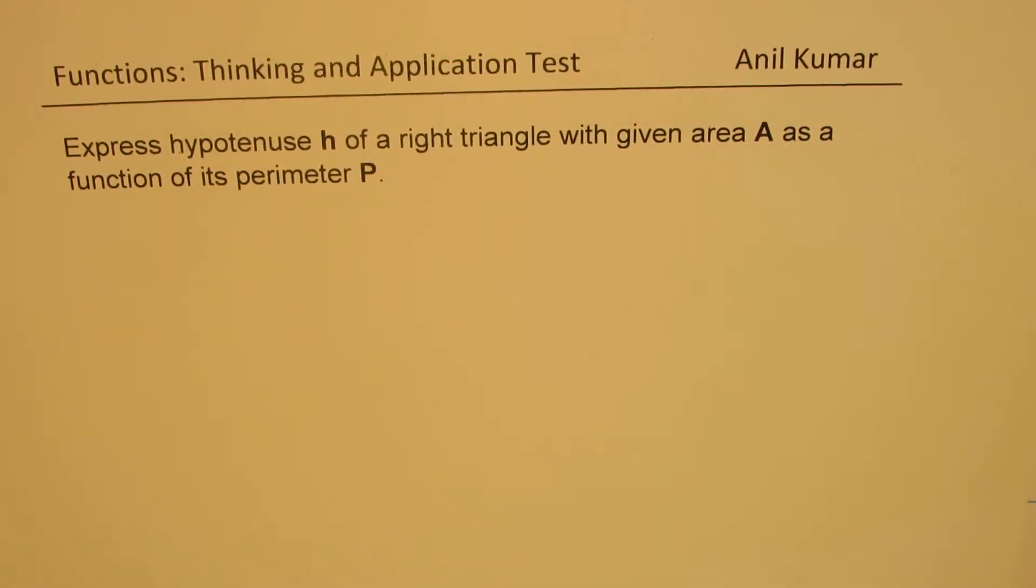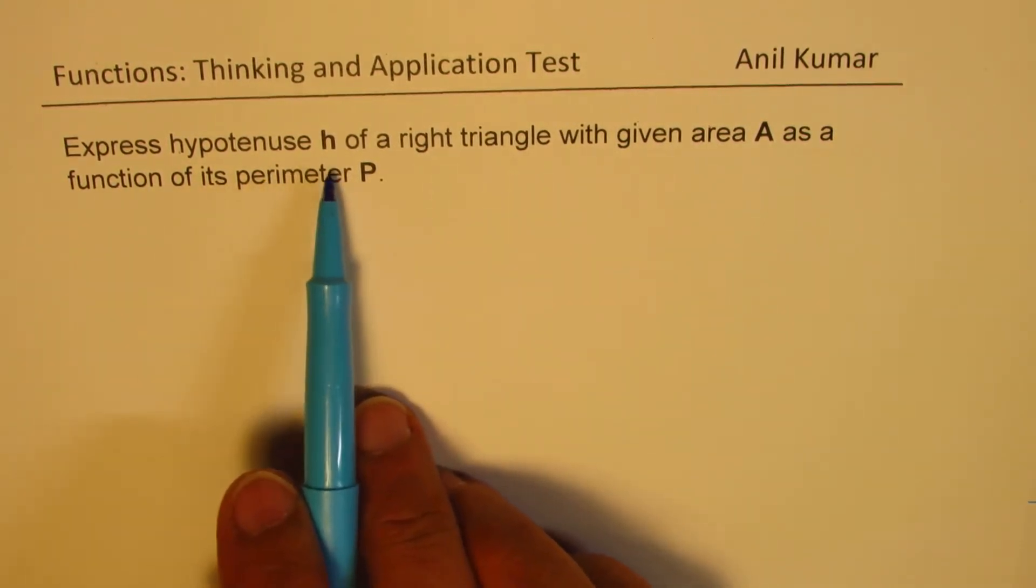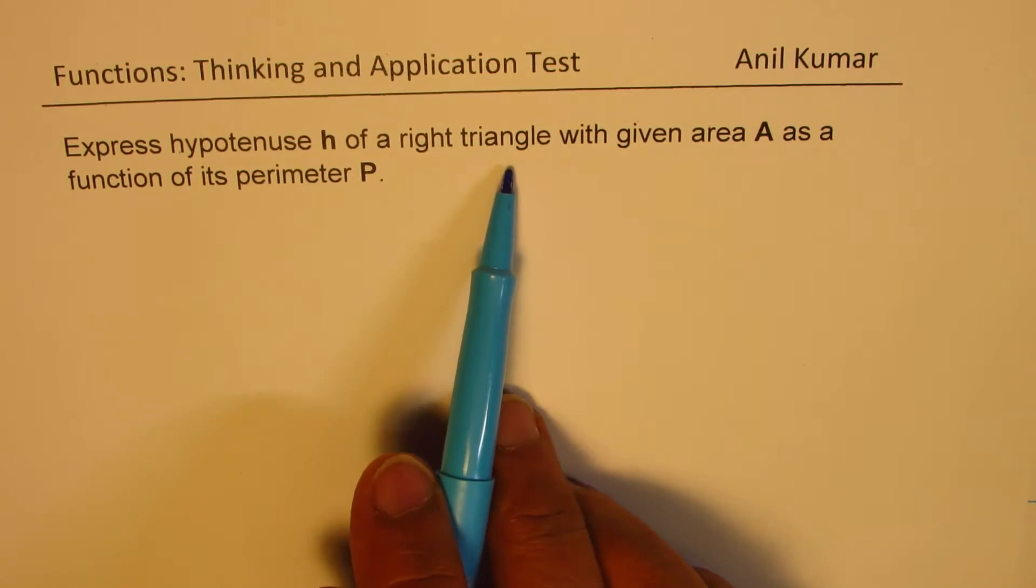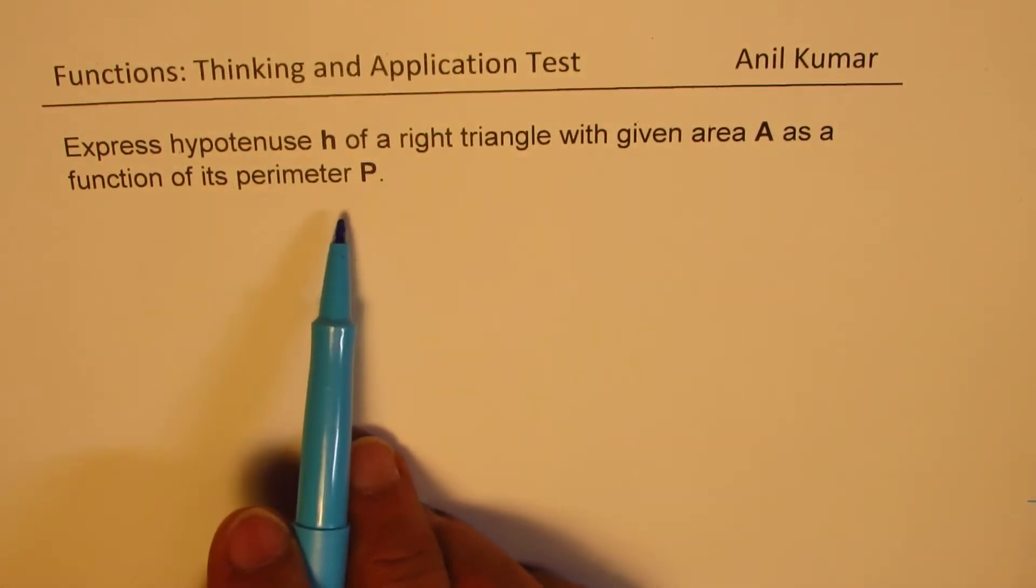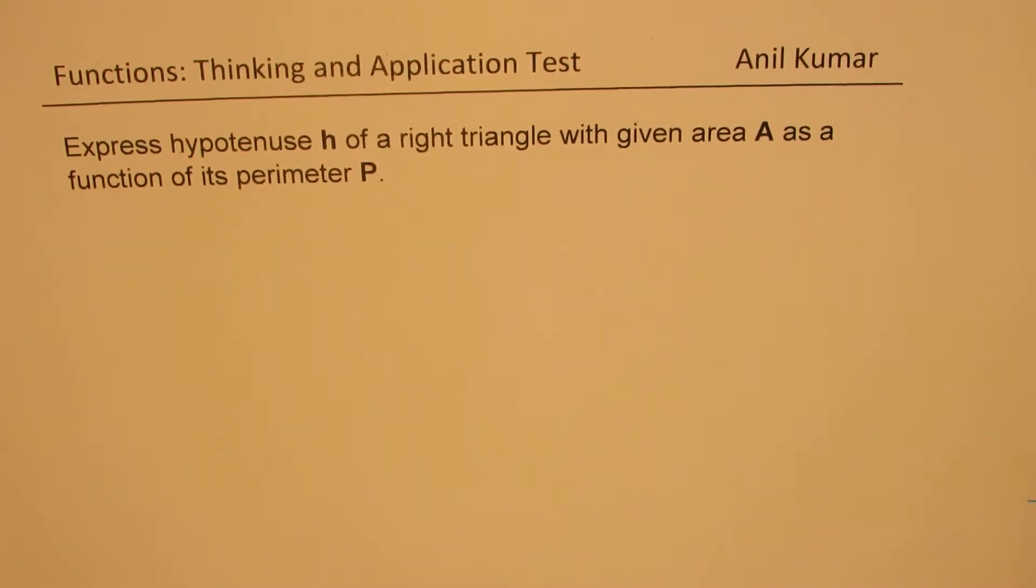Here is a very interesting application question based on functions. The question here is: express hypotenuse h of a right triangle with given area A as a function of its perimeter. So we are going to derive a very general formula.